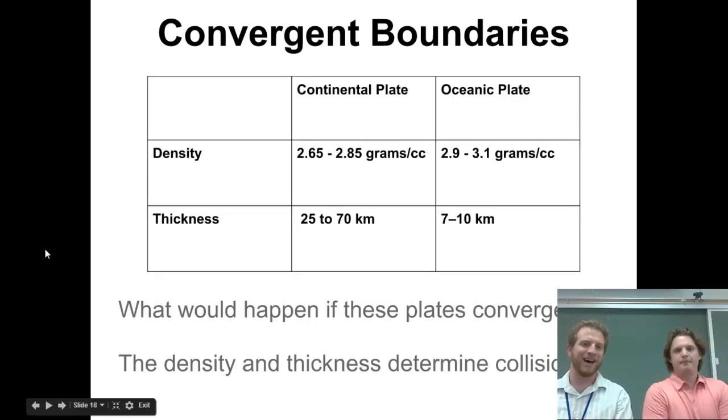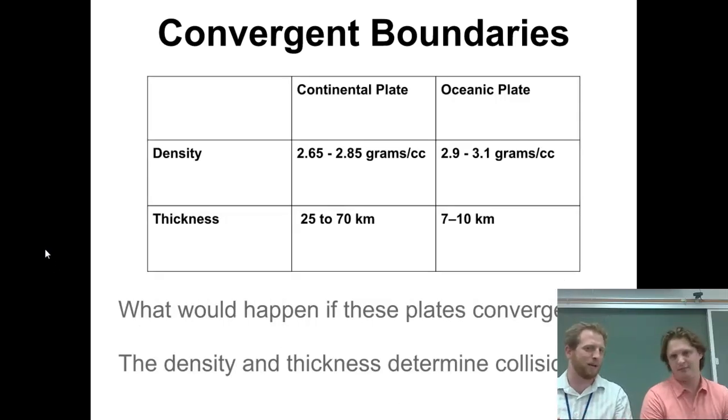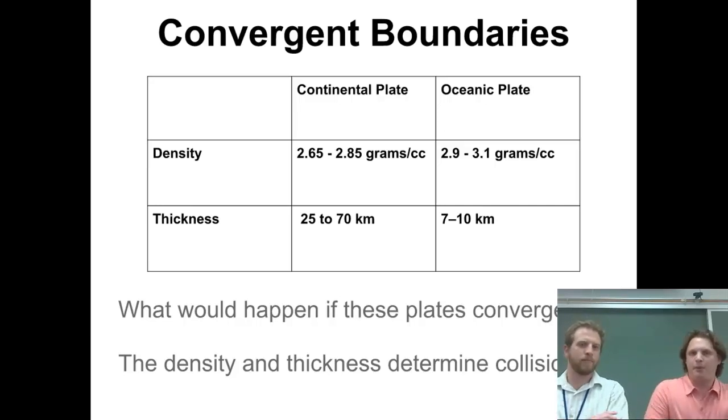We're talking about convergent boundaries. First, we'll discuss types of plates or types of crust. This is really important because it tells us what the plates are going to do when they move and converge. We've already talked about diverging, moving away from each other, so converging means they're actually coming together. The plates themselves are made up of different materials with different densities and thicknesses.